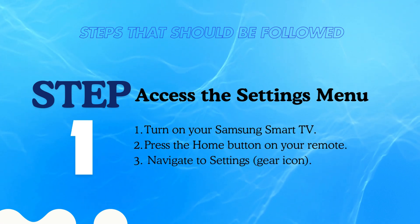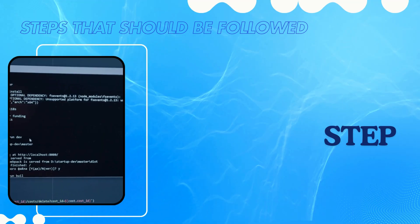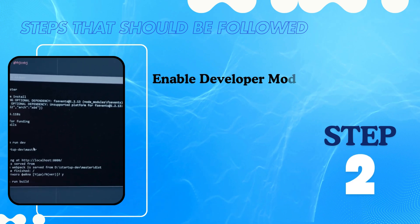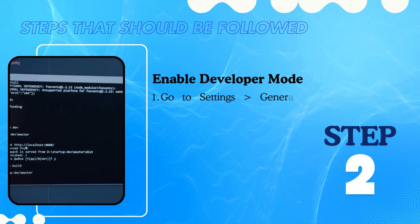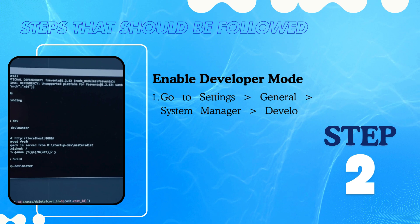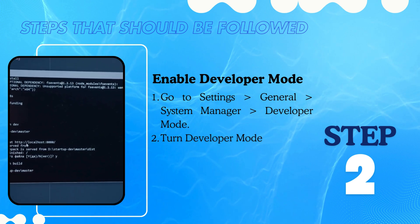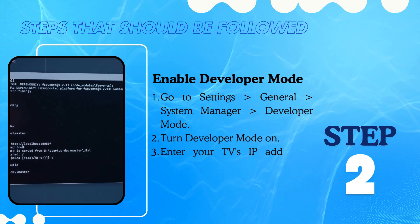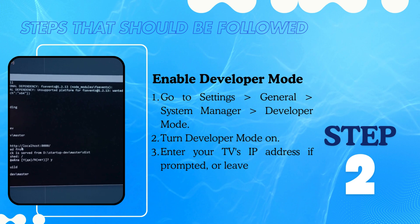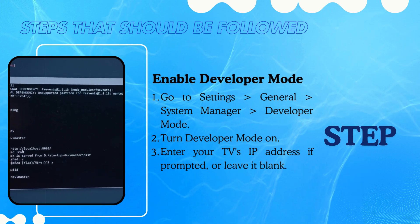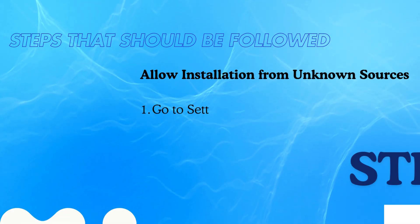Next, enable developer mode. Go to Settings > General > System Manager > Developer Mode, and turn developer mode on. Enter your TV's IP address if prompted, or leave it blank. Then allow installation from unknown sources by going to Settings.